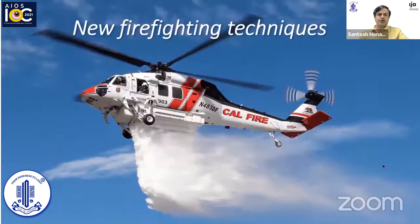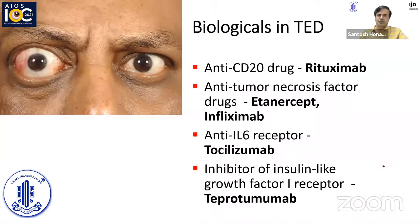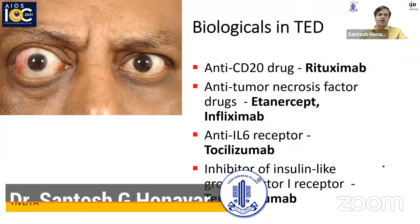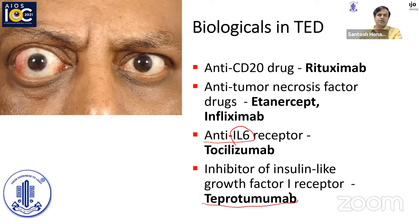There are new firefighting techniques in the form of biologicals. Biologicals are many, and it all depends on which receptor you are targeting. Anti-CD20 is rituximab, which is very commonly available in India. Anti-TNF inhibitor drugs are etanercept and infliximab. There are also anti-IL-6 receptor inhibitors. The new kid on the block is Teprotumumab, about which there is the next talk.